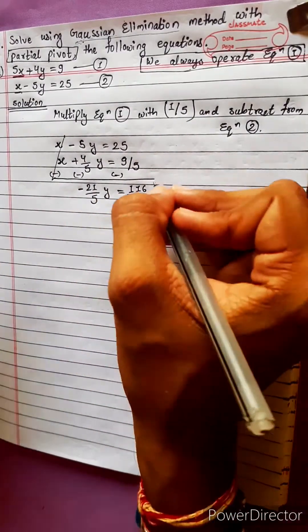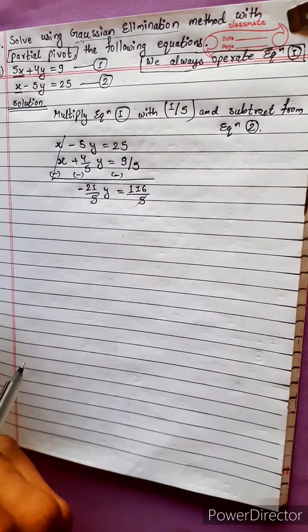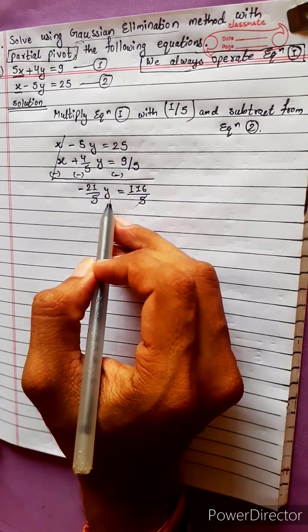The 5s cancel. Now divide: 116 divided by 21. It is not divisible. Let me check.